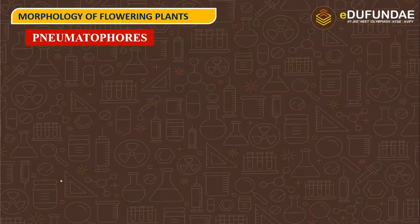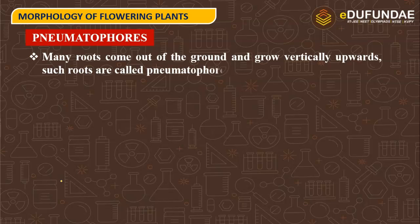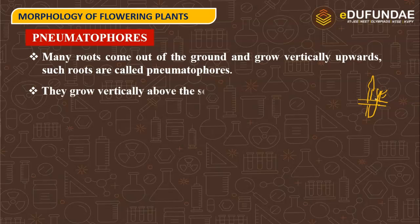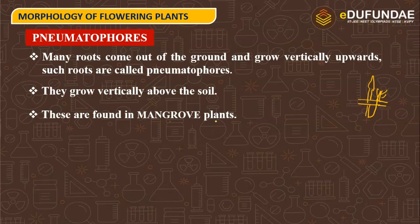The last main modification is pneumatophores. Many roots come out of the ground and grow vertically upward. Such roots are called pneumatophores. These roots grow vertically above the soil and are found in mangrove plants.